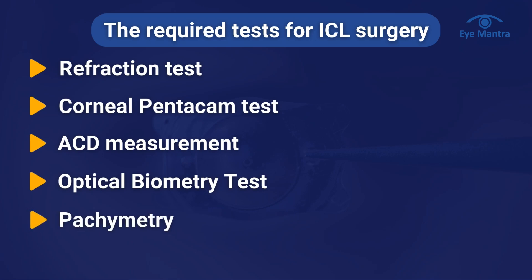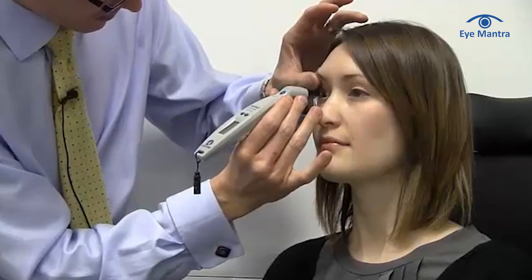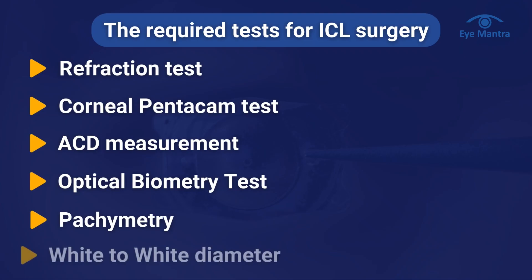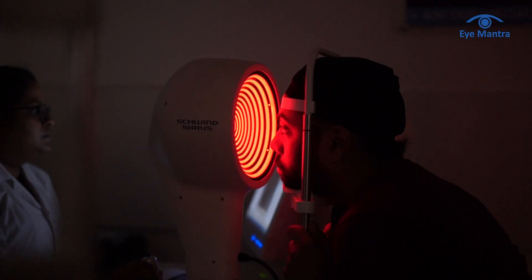Next is pachymetry, which measures the thickness of the cornea. After that is the Y2Y diameter, which checks the horizontal diameter of the cornea. This test is very important to find out the size of the lens, so it is checked through pentacam as well as manually.